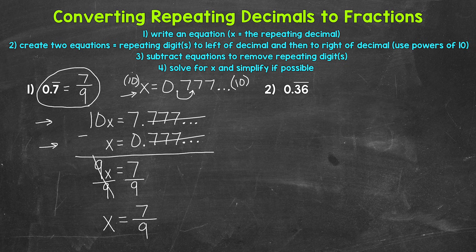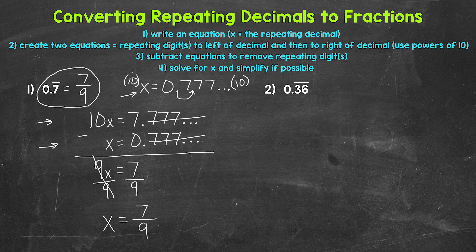You can always double check by dividing the numerator by the denominator — either with a calculator or by hand — and you should get the original repeating decimal. Before moving on, all of those steps may seem confusing, long, and overwhelming at first. But I like to simplify them and think of this as: left, right, subtract, solve. Get the repeating digit or digits to the left, to the right, subtract, and solve.